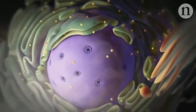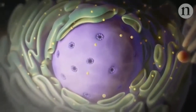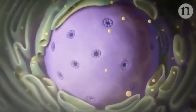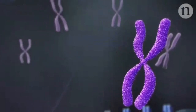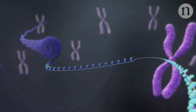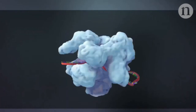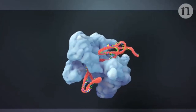The CRISPR-Cas9 system is a tool for cutting DNA at a specifically targeted location. The technique has already revolutionized gene editing. Since being discovered in a bacterial immune system, CRISPR-Cas9 has been adapted into a powerful tool for genomic research.